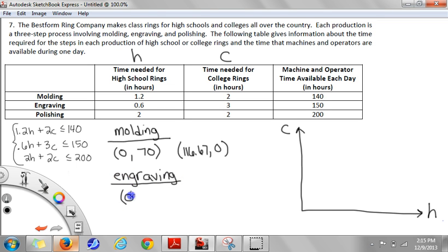Now I'll find my intercepts for the engraving constraint. If h was 0, c would have to be 50. That's 150 divided by 3. And if c was 0, then h would have to be 150 divided by 0.6, which gives me 250.